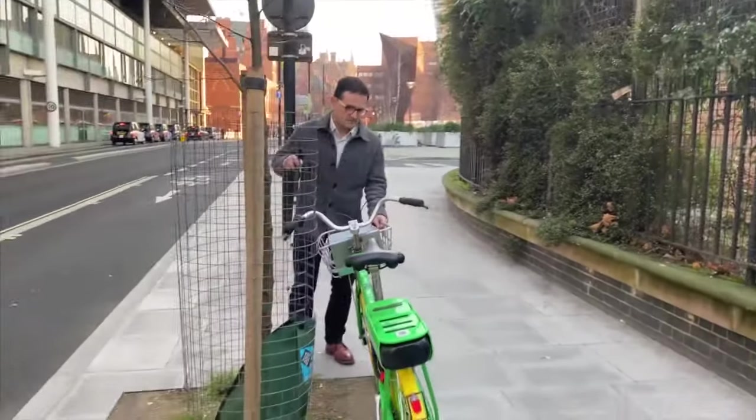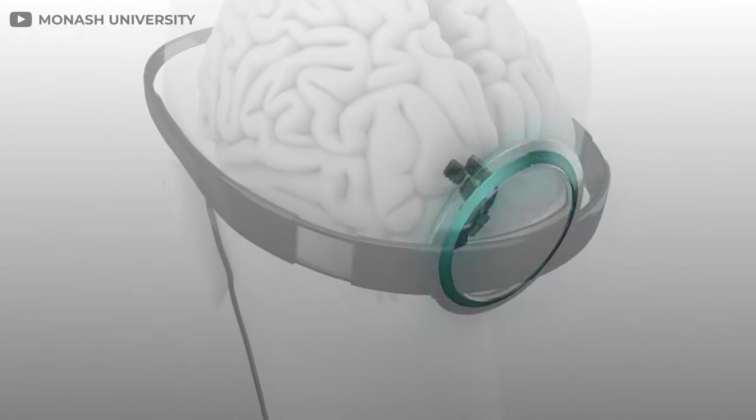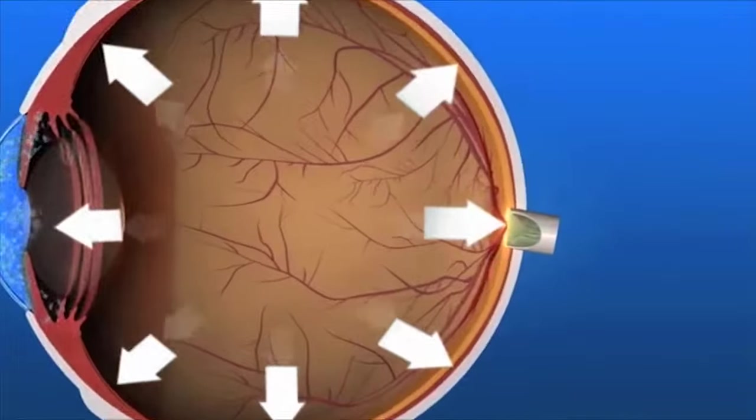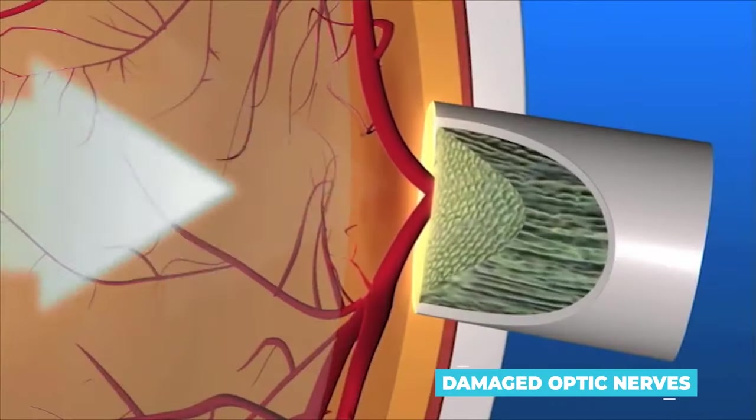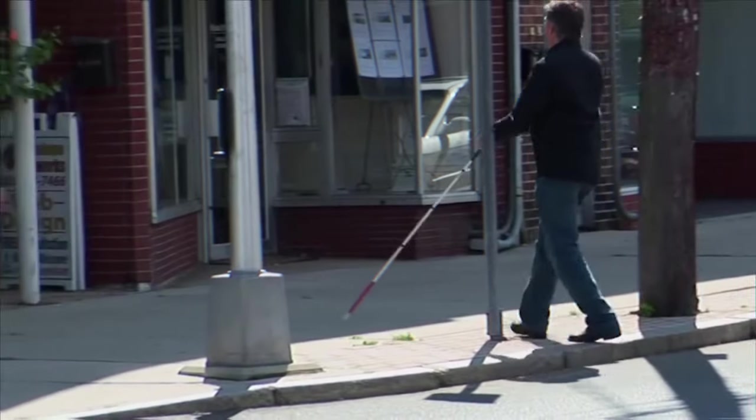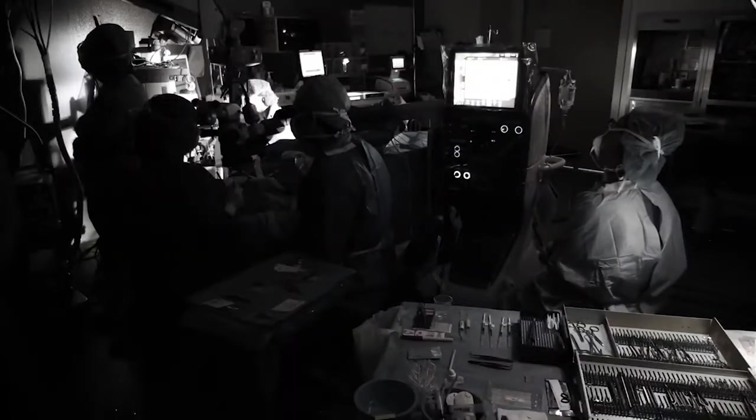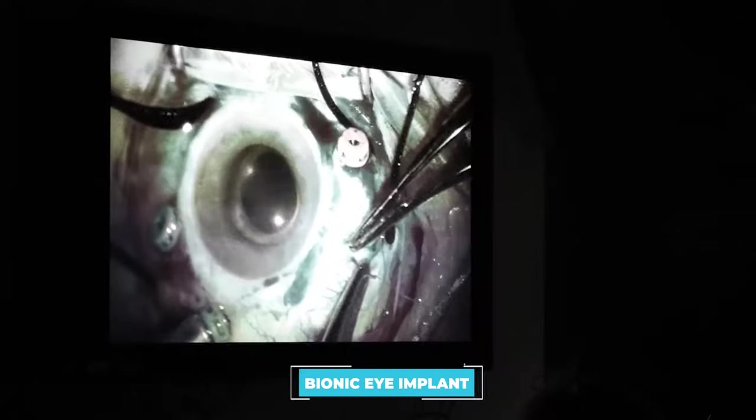Although this is great news for those people who suffer from blindness, it's worth noting that the bionic eye system created by the Monash Vision Group is only for people with damaged optic nerves. Blindness, however, can occur due to a number of different reasons.